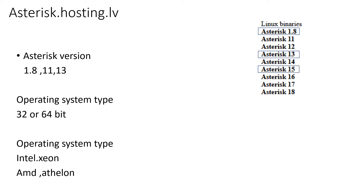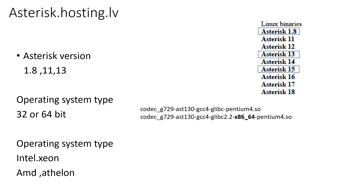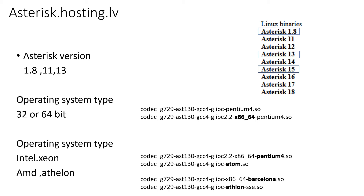Once you have these details, go to the asterisk.hosting.lv website. Under Linux binaries, click your Asterisk version. Next, based on OS bit size, select either 32-bit or 64-bit — x86_64 represents 64-bit. Next, based on CPU vendor ID, select the relevant G729: for Intel Xeon-based CPU select Pentium, for AMD-based CPU select Barcelona, and for Atom-based CPU select Atom.